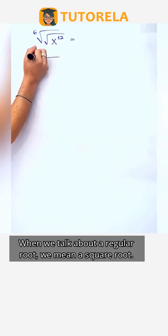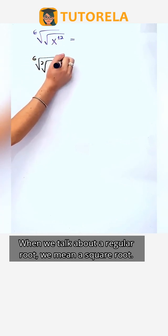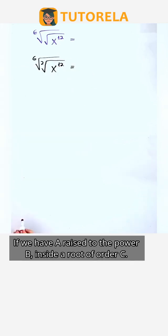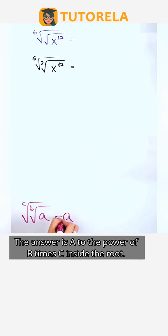When we talk about a regular root, we mean a square root. If we have a raised to the power b inside a root of order c, the answer is a to the power of b times c inside the root.